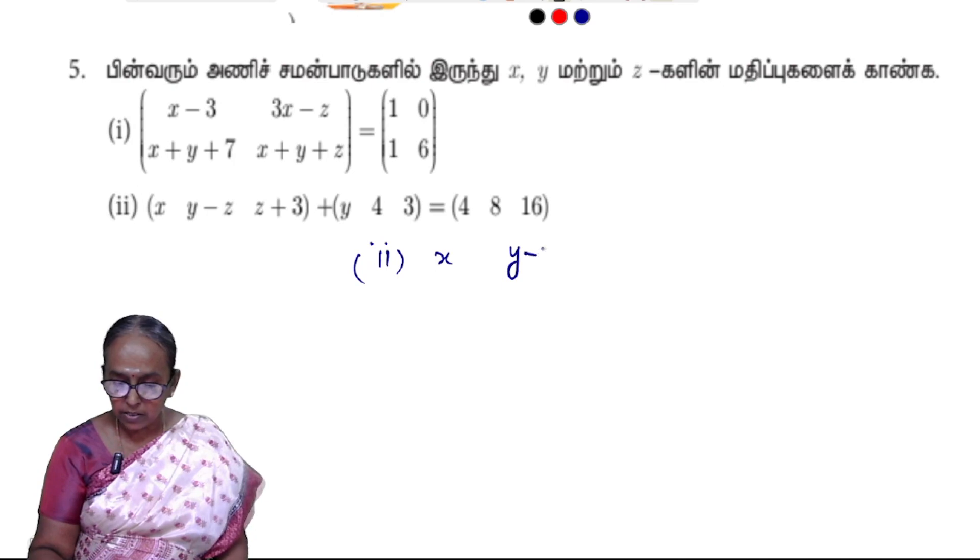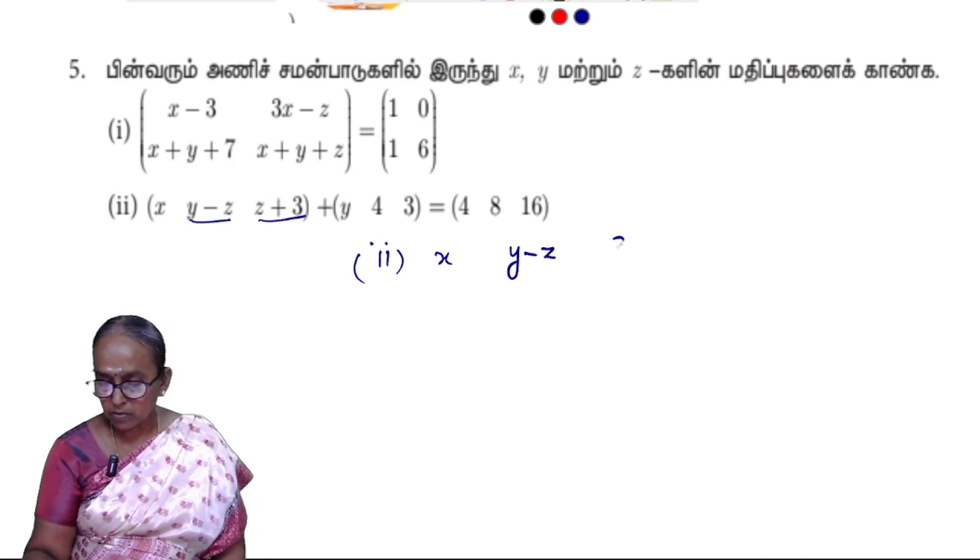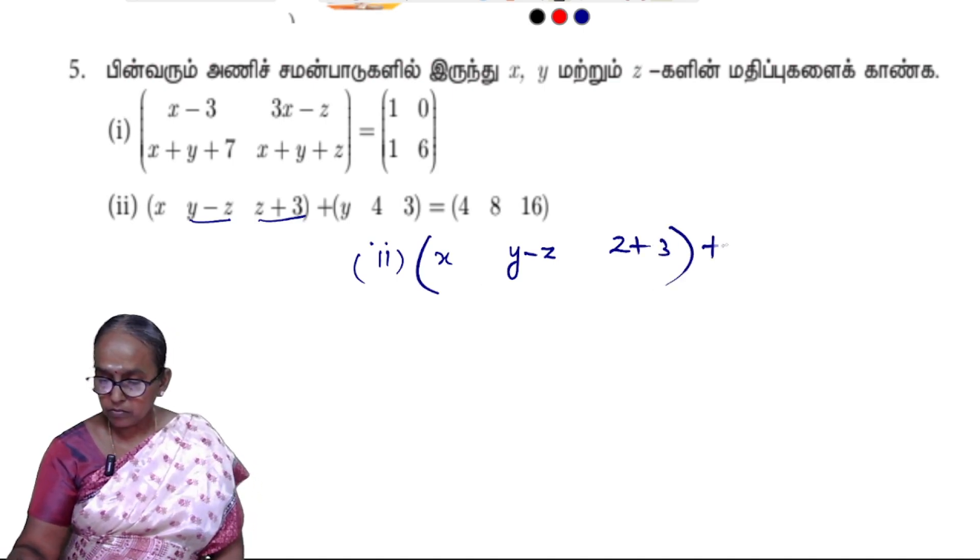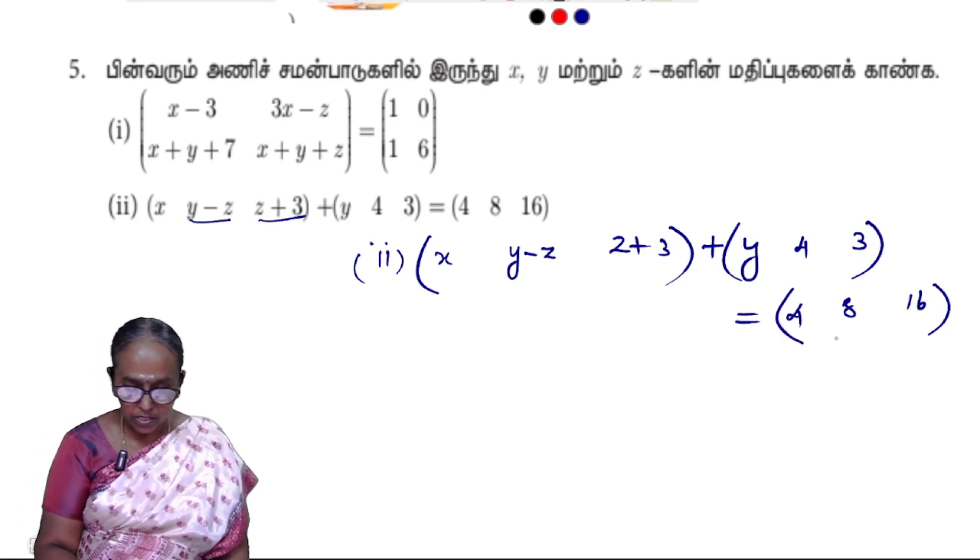Second sum: X one element, Y minus Z one element, Z plus 3. Corresponding elements are equal.